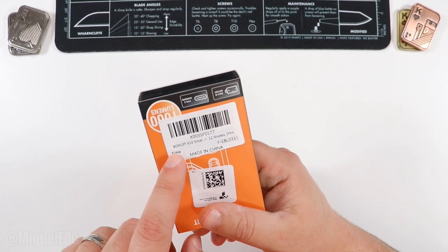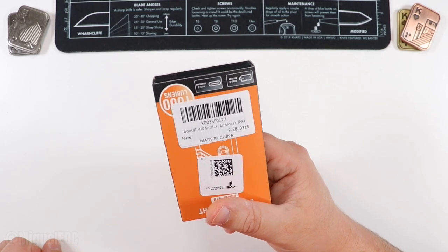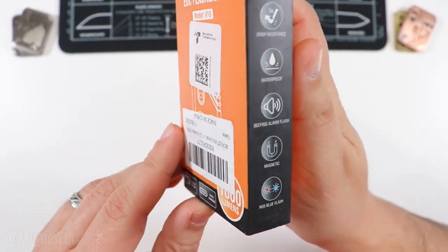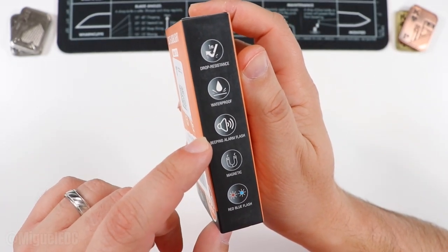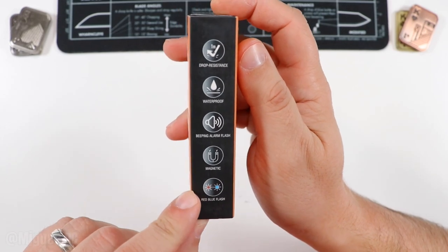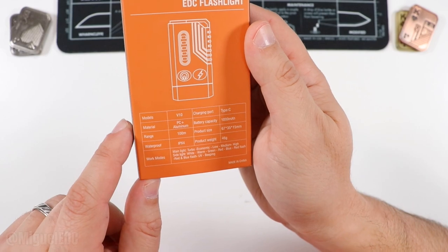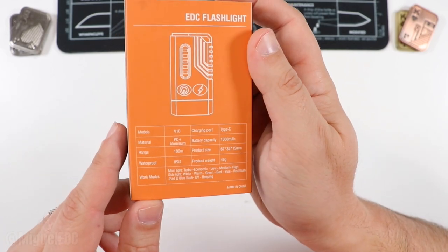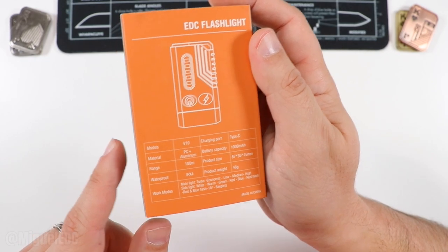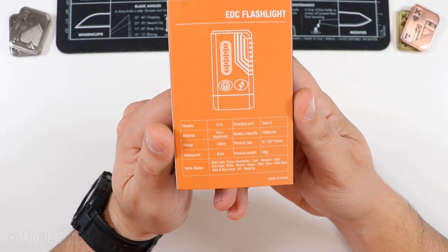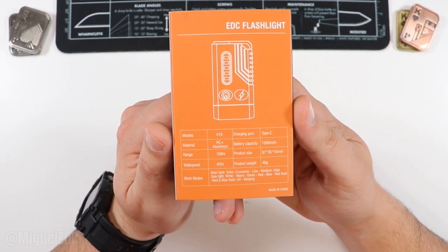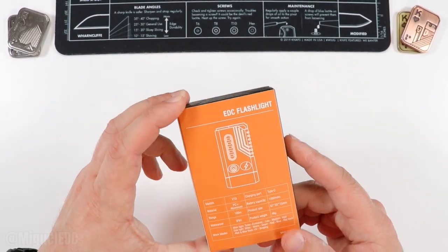This one is made in China, it is the Boruit V10 small. Let's see, we got a thousand lumens it says here. It does charge via Type-C which is nice, it has a built-in battery which is good, drop resistant up to a meter, waterproof. It does have a beeping alarm flash, magnetic. It does have red and blue flashlights for when you want to impersonate the cops, just kidding don't do that. Model V10, charging port Type-C, material PC plus aluminum, battery capacity is a thousand milliamps, range is 100 meters, IPX4 waterproof, product weight 46 grams. Work modes: we have the main light turbo, economic, low, medium, high, side light white, warm, green, red, blue, red flash, red and blue flash, UV and beeping. It is the Swiss Army knife of flashlights we have going on here, it is a jack of all trades.